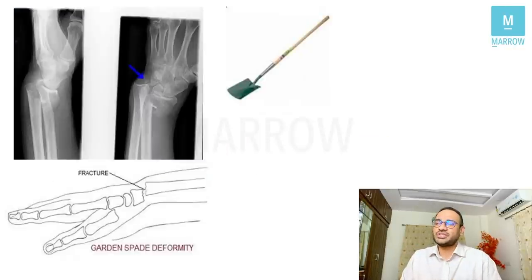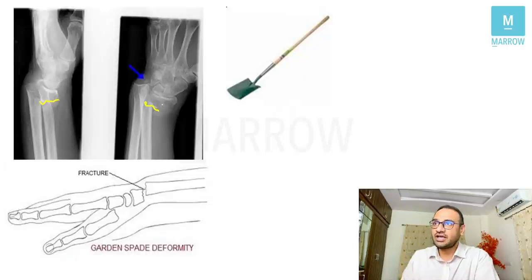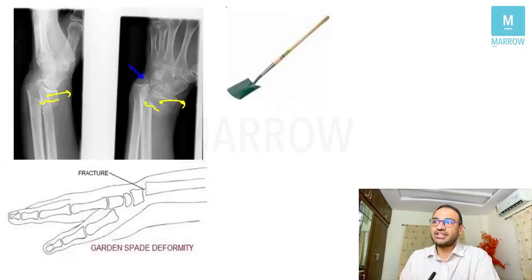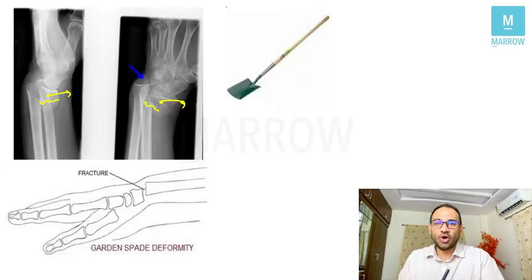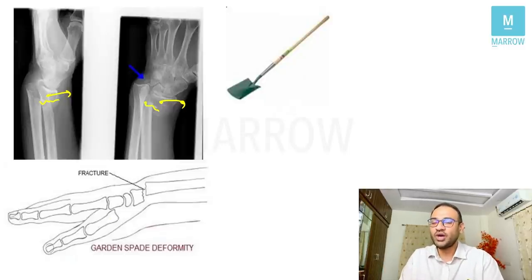Looking at the other fracture options: if the distal fragment goes ventrally (anteriorly), it is the opposite of Colles' — called Smith's fracture or reverse Colles' — which gives garden spade deformity. If the fracture line goes intraarticularly, it is Barton's fracture — not only a fracture but a fracture with carpal subluxation. Fracture of the radial styloid is chauffeur's fracture (chauffeur is French for driver).